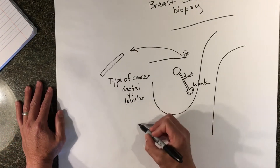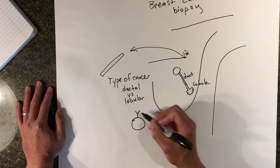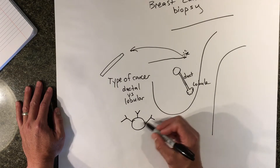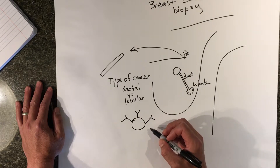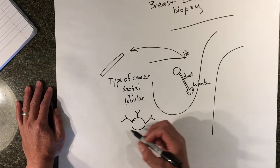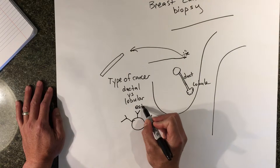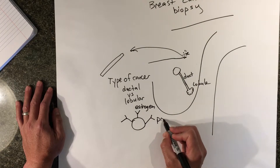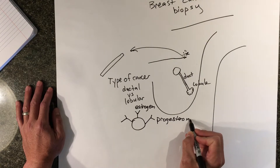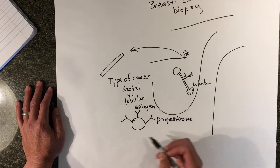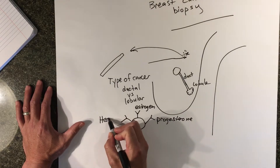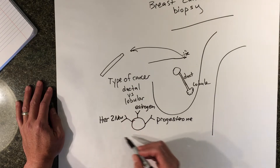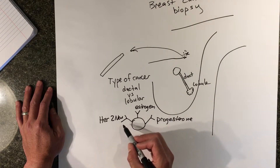If you look at a breast cancer cell under a microscope, there are really three markers that we care about on the surface of the cell. These markers are receptors — they pick up chemicals or hormones in the body and signal the cell to have certain behaviors. One that we obviously want to check for is estrogen. Estrogen receptors mean that the breast cancer cells are stimulated by estrogen. A similar hormone is progesterone. If there's a lot of estrogen and progesterone receptors on a breast cancer cell, they are hormone sensitive. And the last is a gene called HER2-NU. HER2-NU is a growth factor receptor, meaning that if there's a lot of these receptors on a cell, they are stimulated to grow.